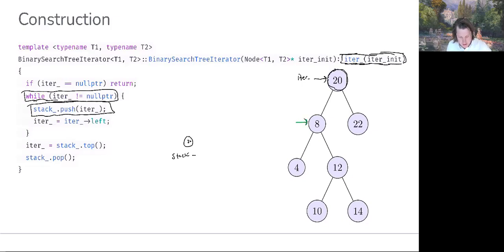Okay, at this point, iter is still not equal to the null pointer. So we'll push eight onto our stack, and then we'll move iter to iter's left.